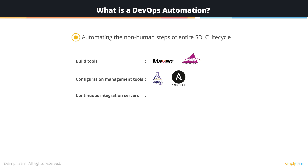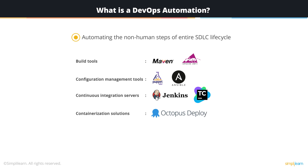Continuous integration tools like Jenkins and TeamCity can automate various steps of your delivery pipeline execution. Then there are tools like Octopus Deploy and Kubernetes that can automate the code deployment steps of your continuous deployment. Lastly, you have continuous monitoring tools like Nagios to automate the server monitoring — in other words, monitoring the different applications you have running on your server.